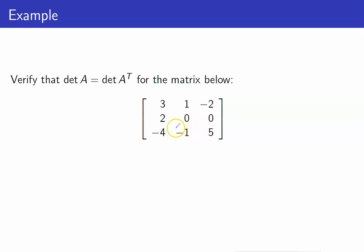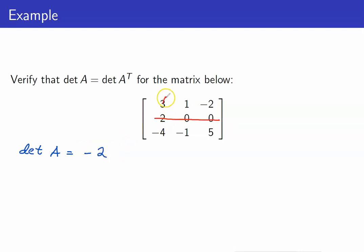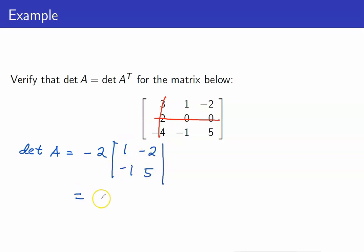Let us verify this result with a 3 by 3 matrix. I will compute the determinant of this matrix by using the cofactor expansion along the second row, because it has exactly one non-zero entry there. The determinant of A is equal to — using the plus, minus sign pattern — copy that entry and remove the row and column containing 2, then multiply with the determinant of the resulting matrix. Therefore, this is negative 2 times 5 minus 2, that is 3, so this determinant is equal to negative 6.